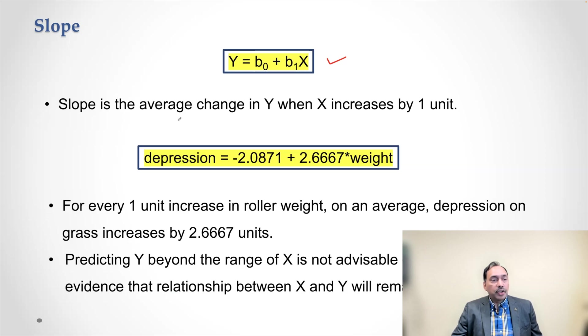Slope is the average change in Y when X increases by 1 unit. So in this case, we are talking about this number now as a slope. For every 1 unit increase in roller weight, on an average, depression on grass increases by 2.6667.